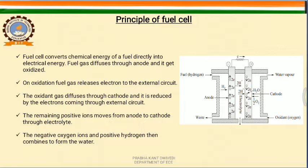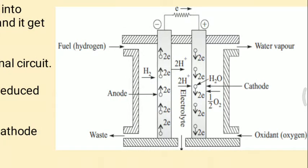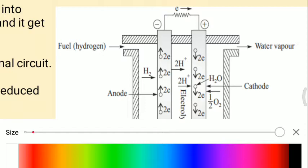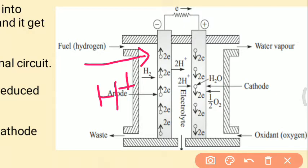The principle of fuel cell: it converts chemical energy of a fuel directly into electrical energy. Fuel gas diffuses through the anode and gets oxidized. As shown here, the fuel — hydrogen in this case — diffuses into the anode where oxidation takes place.